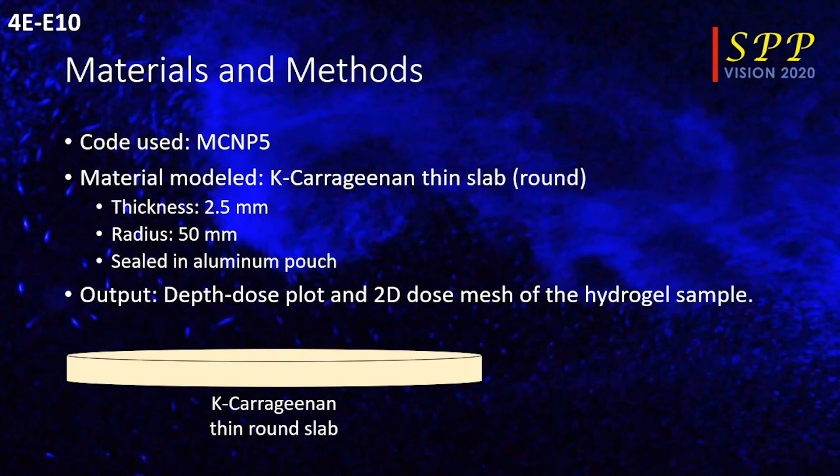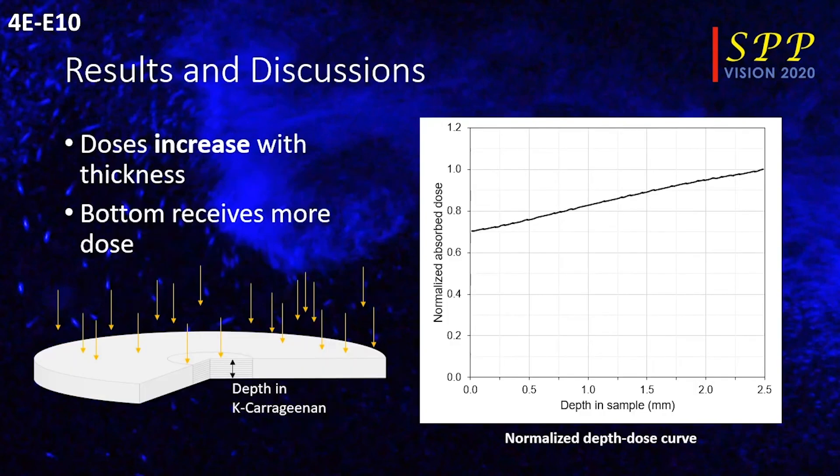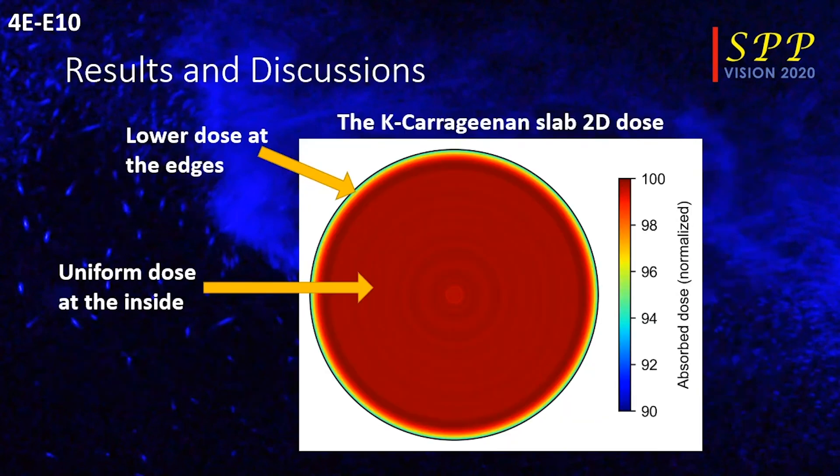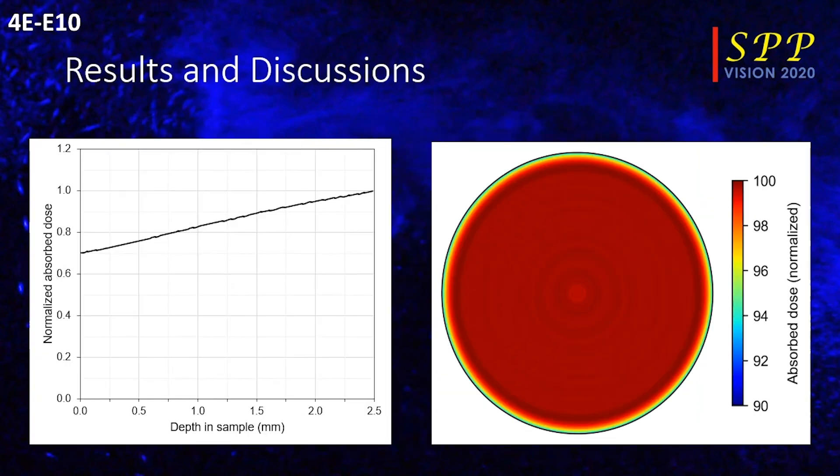In this work, we used MCNP5 to model high-energy electrons incident in the kappa-carrageenan hydrogel samples. Our results are plotted in the right as a function of the depth within the carrageenan. Surprisingly, the dose is increasing due to the cascading amount of electrons as it passes through the carrageenan sample. Our second set of results show a 2D mesh of the kappa-carrageenan sample, showing that the dose in the edges are lower because of the lack of scattering materials in the edges. We used Monte Carlo simulations in this study to get the absorbed dose in the kappa-carrageenan samples.